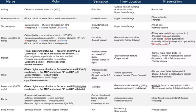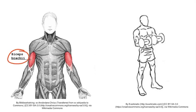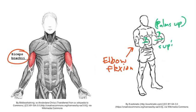Now let's talk about the musculocutaneous nerve. The main thing to remember is that it innervates the biceps brachii muscle. The biceps brachii muscle is responsible for elbow flexion and forearm supination. You can see the musculocutaneous nerve labeled here. Notice this man is doing biceps curls — he is flexing his elbows and holding his palms to the ceiling, indicating supination. If you forget the difference, just remember supination is like holding a bowl of soup with your hands, so your palms would be towards the ceiling.